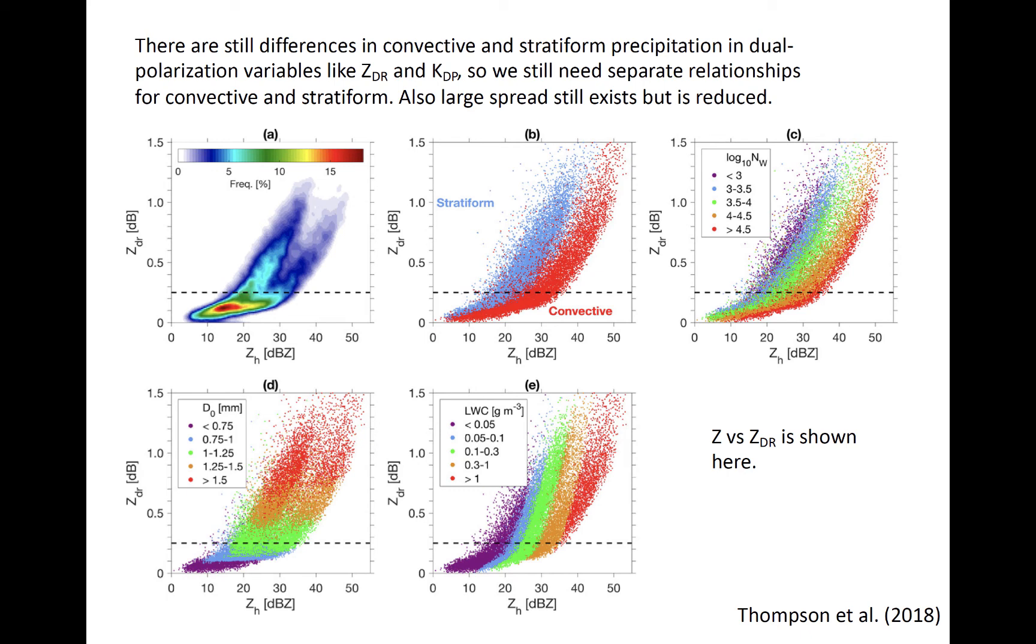The 2D histograms of ZDR are shown at top left for distrometer data that we looked at earlier, with an example of a split into convective and stratiform seen by the different colors at top center. The other panels show distrometer derived fields associated with the drop size distribution in the Z-ZDR space.